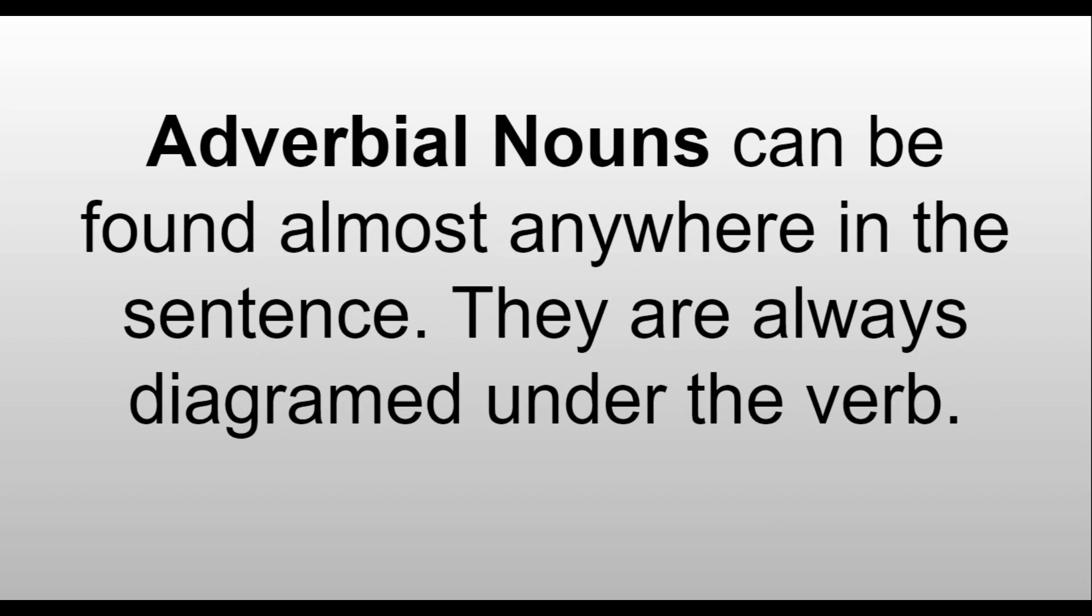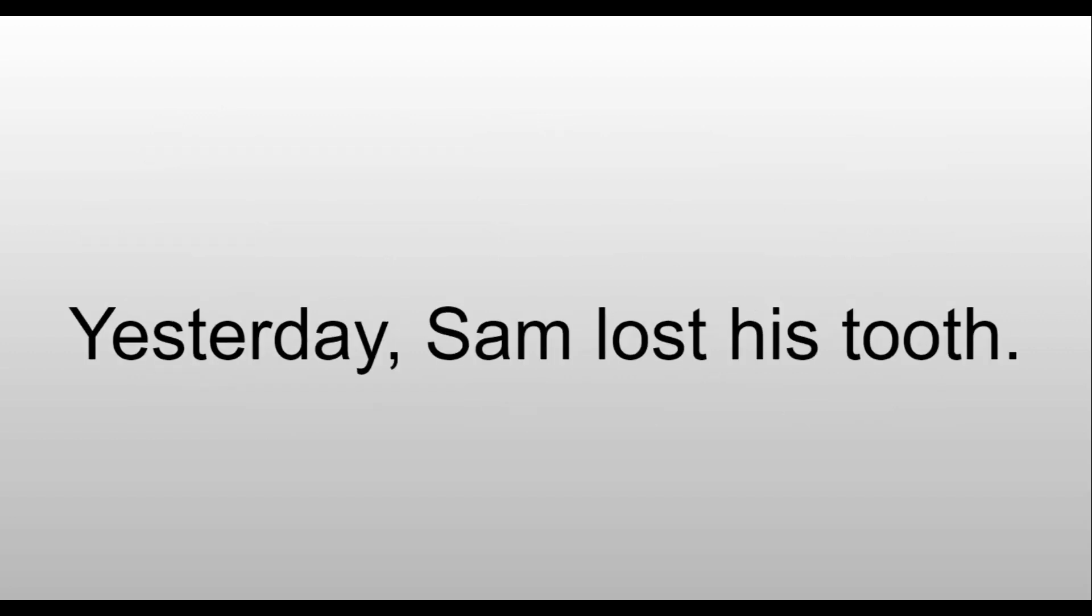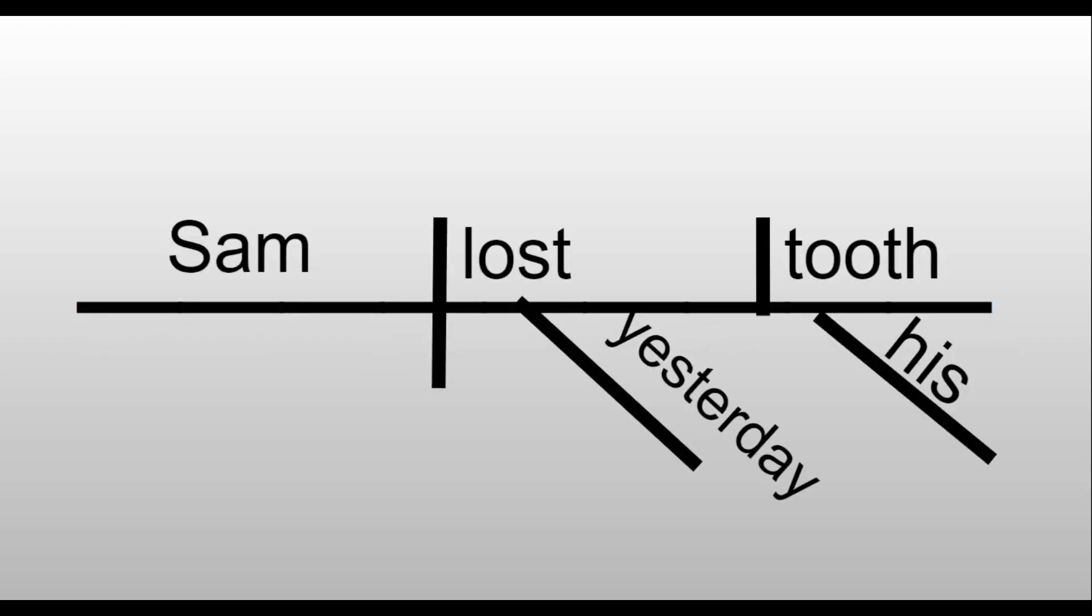Adverbial nouns can be found almost anywhere in the sentence. They are always diagrammed under the verb. Yesterday Sam lost his tooth. Our main sentence is Sam lost tooth. Sam is our main noun, lost is the verb, and tooth is the direct object. Yesterday is describing when he lost the tooth, so even though it's at the beginning of the sentence, it's the adverbial noun. We diagram it under the verb.